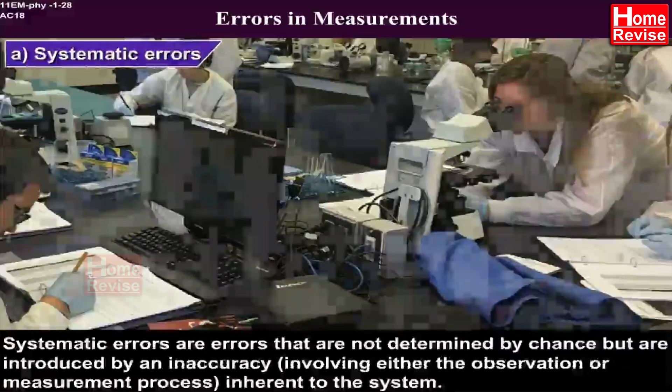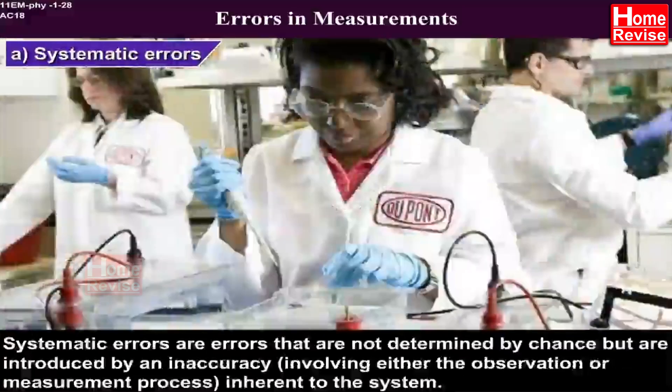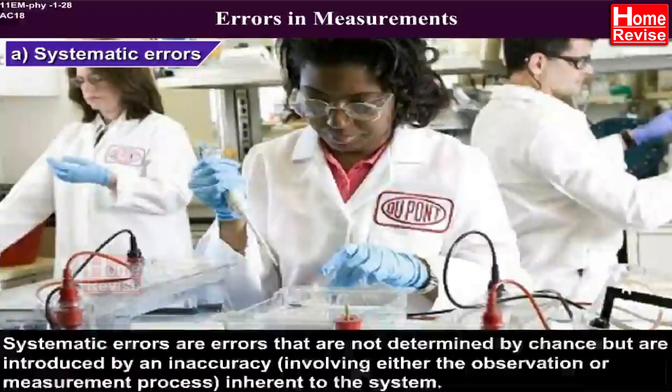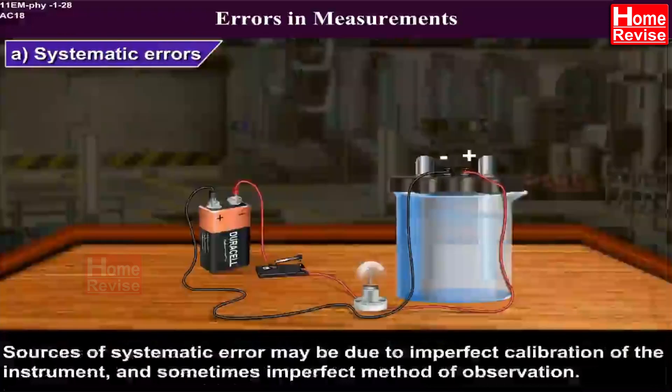Systematic errors are errors that are not determined by chance, but are introduced by an inaccuracy involving either the observation or measurement process inherent to the system. Sources of systematic error may be due to imperfect calibration of the instrument